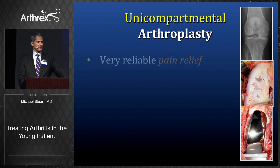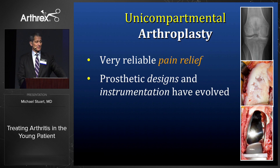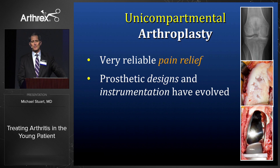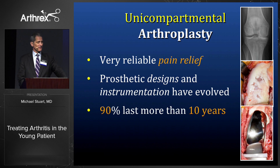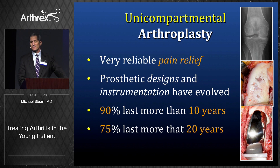Unis are very reliable for pain relief. Prosthetic designs and instrumentation have evolved, making it a much simpler procedure — I do them all as outpatients with very little pain. Patients are on crutches for about two weeks, then a cane for another couple weeks. Results show 90% survival at more than 10 years and 75% at more than 20 years.